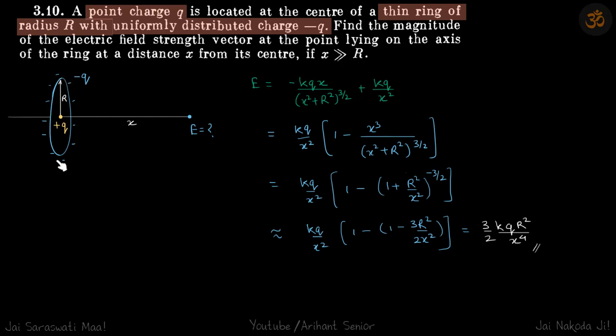We have already seen that due to a ring the field at a distance x is kqx by x square plus r square power 3 by 2, and we will add the field because of this charge plus q to it, which will be kq by x square.